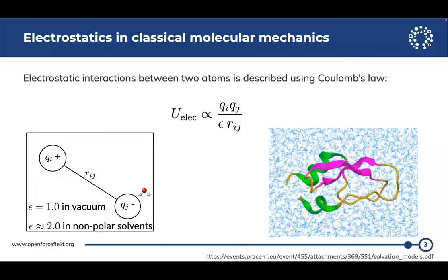For the electrostatic part, why do we care about polarizabilities? In molecular mechanics, we use Coulomb's law to calculate electrostatic interactions. In Coulomb's law, we have the dielectric constant as a contribution to the potential energies. In vacuum, the dielectric constant is usually 1, in non-polar solvent it's usually 2, and for water it's around 80. So if we do not have a good force field to represent the dielectric constant, we will not have good electrostatic potential energies.